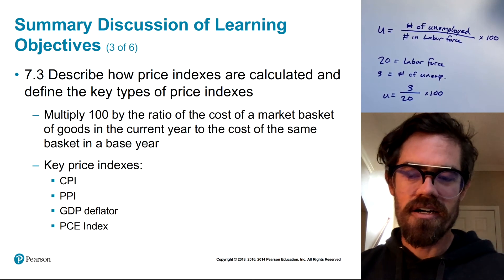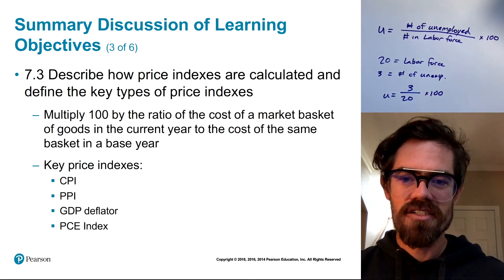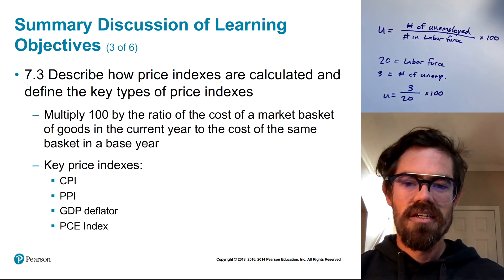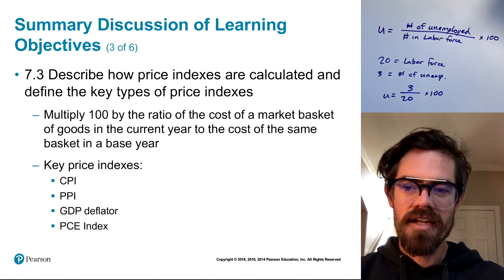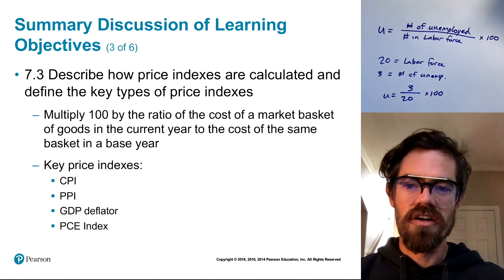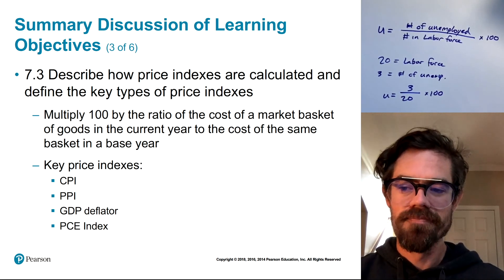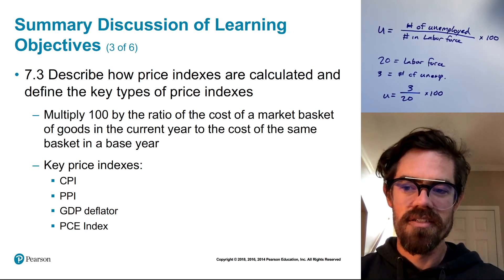In Section 3, we talked about different price indexes and how to calculate a price index. It's basically the ratio of the cost of a market basket in a current year relative to a base year. Make sure you go over that and understand the different key price indexes we discussed.